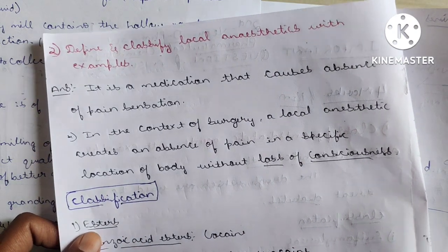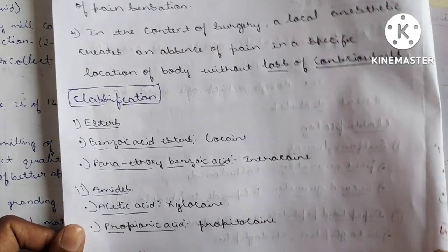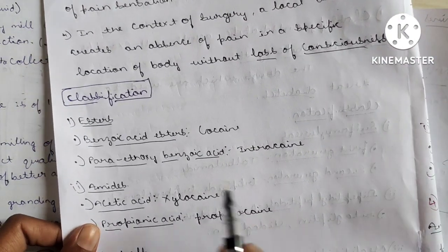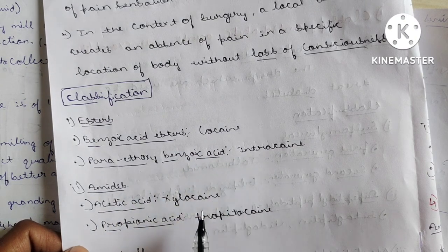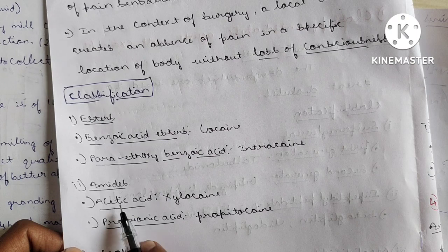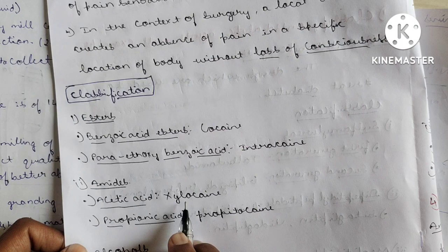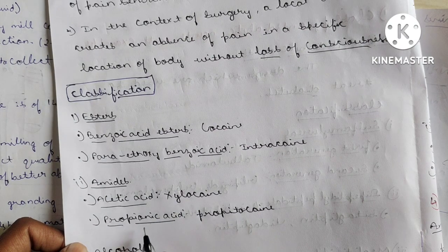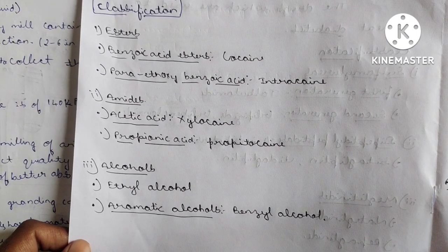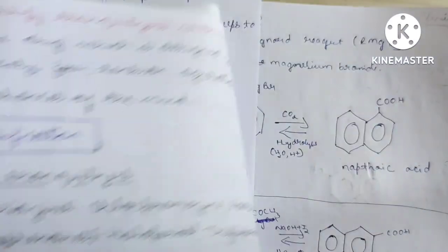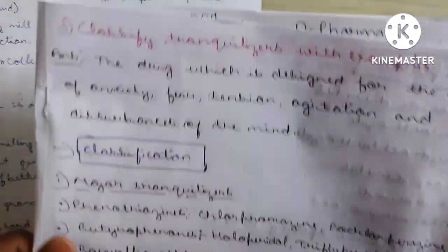Classification of local anesthetics: Esters — benzoic acid esters like cocaine; para-ethoxybenzoic acid esters like intracaine. Amides — acetic acid derivatives like xylocaine (used as 2% xylocaine in hospitals today); propionic acid derivatives like prilocaine. Alcohols — ethyl alcohol and aromatic alcohols like benzyl alcohol.